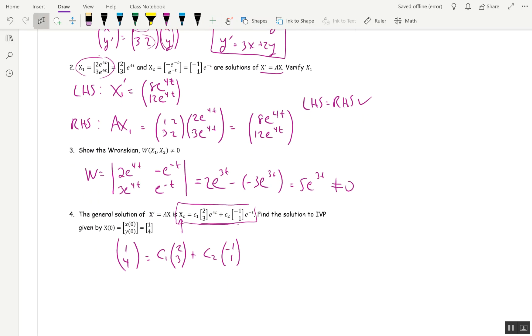That's a system of two equations and two unknowns. The top equation reads 1 = 2c₁ - c₂, and the bottom equation reads 4 = 3c₁ + c₂. Add these two equations together: 5 = 5c₁, so c₁ = 1. Plug that back into the top equation, and we get c₂ = 1 also.